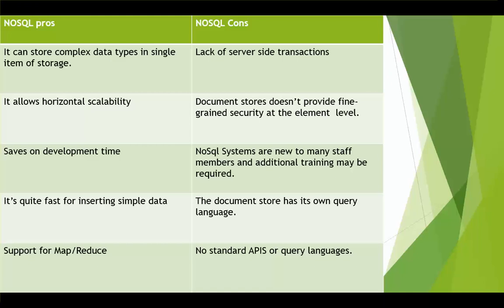Here are the pros and cons of NoSQL database systems. The pros: firstly, it can store complex data types in a single item of storage. It allows horizontal scalability which doesn't require you to set up complex zones, and the data can be easily partitioned and processed in parallel.